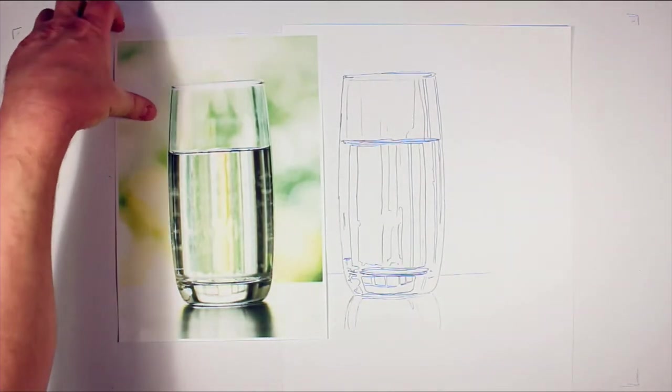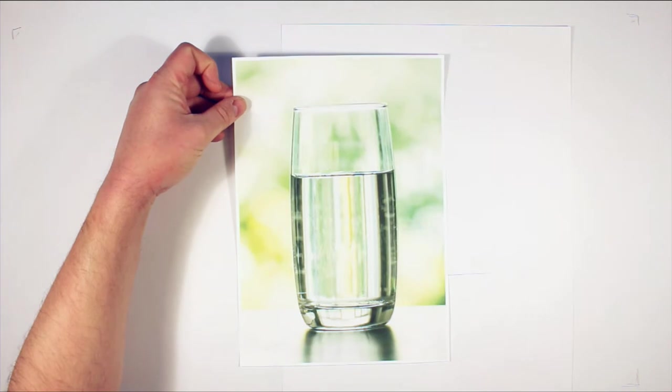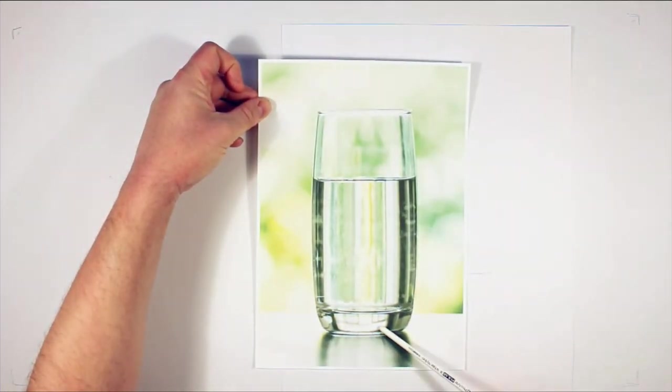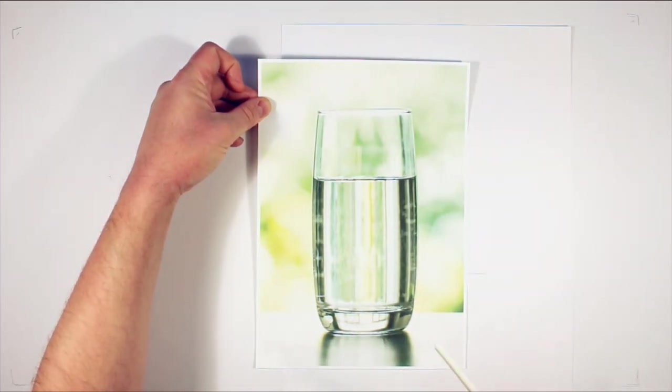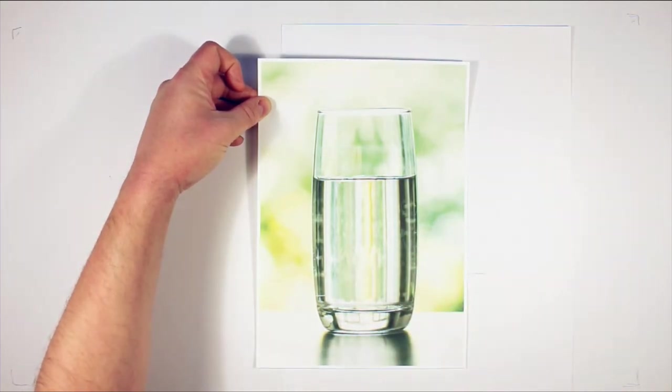Now one of the tips when painting glass, because you're going to have highlights and reflections, would be to leave the white highlights, such as here, here, here, along the bottom there, and a little bit along the top. Leave them untouched. You don't need to apply paint to those areas. We can let the paper or the canvas come through underneath.